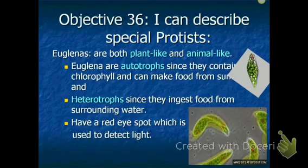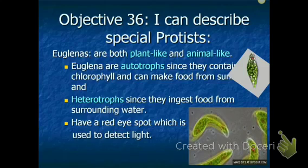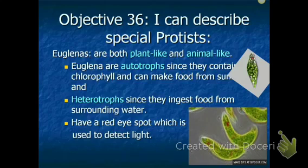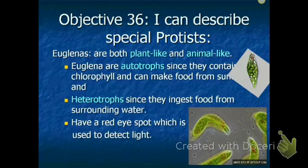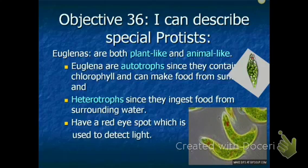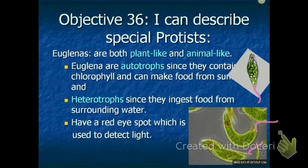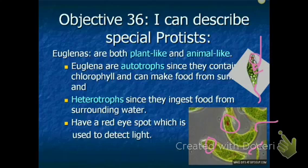Objective 36: I can describe special protists. The first special protist is the euglena — it is both plant-like and animal-like. It has a flagella for movement. It's green because it contains chloroplasts and can make its own food through photosynthesis. But when sunlight isn't available, it can also ingest food from surrounding water. The other cool thing about euglena is they have a red eye spot used to detect light.